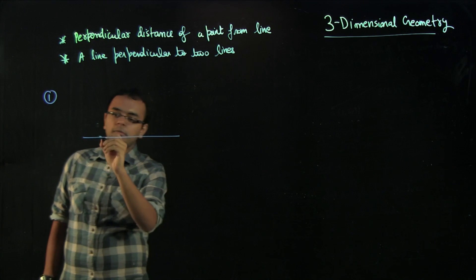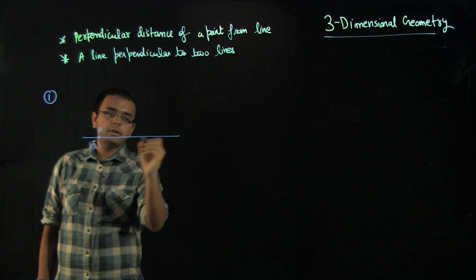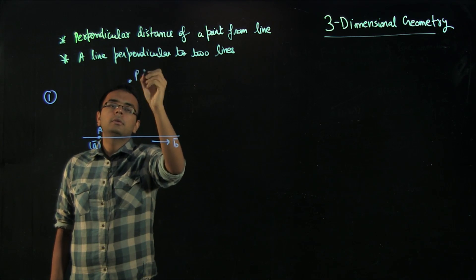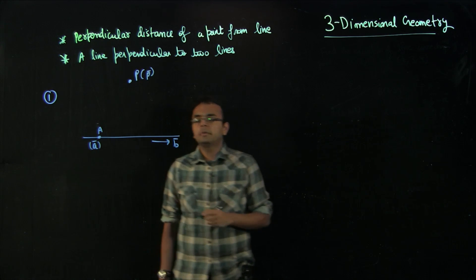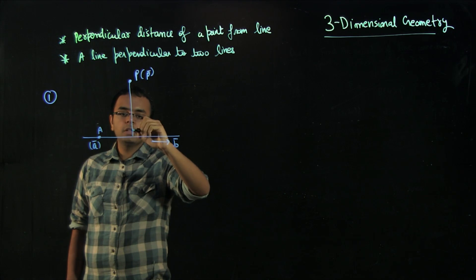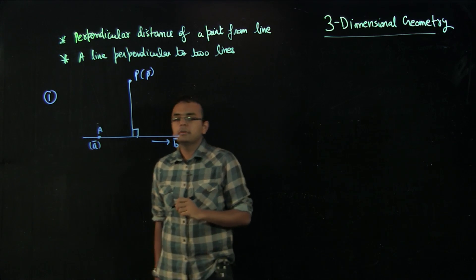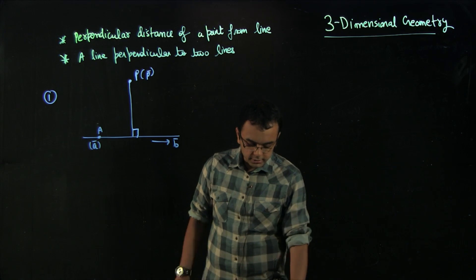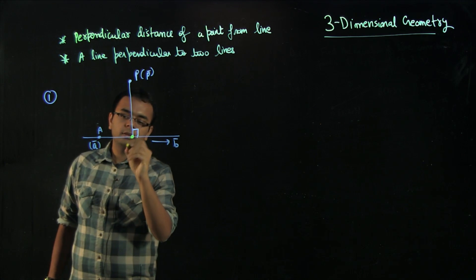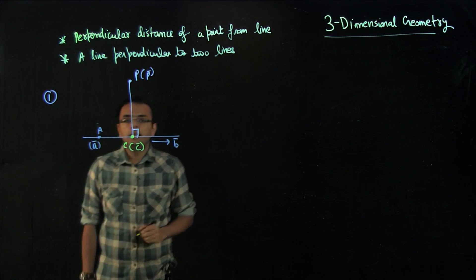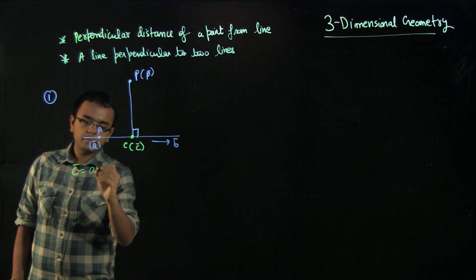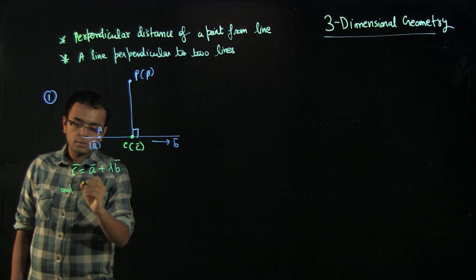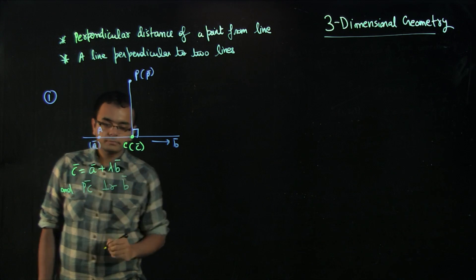The first topic: we have been given a line with a point A (as vector A), a parallel vector B, and a point P (as vector P), and we have been asked to find the perpendicular distance of the point from the line. You may recall this type of problem in 2D straight lines, but this is 3D dimensional geometry. One approach is to consider a point C on the line, so C vector equals A vector plus lambda times B vector, and PC vector is perpendicular to B vector.